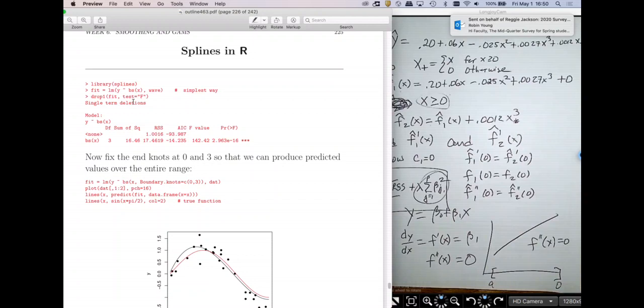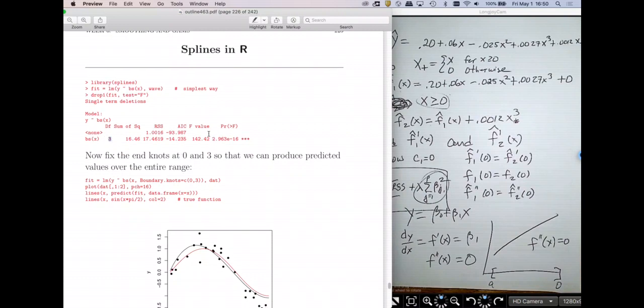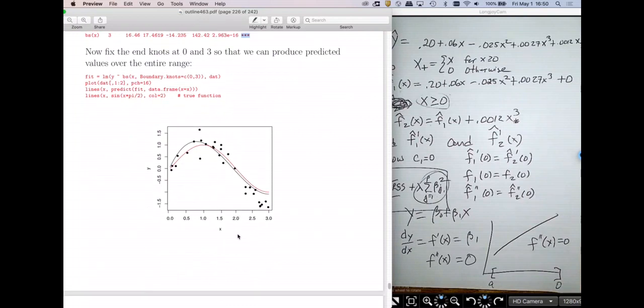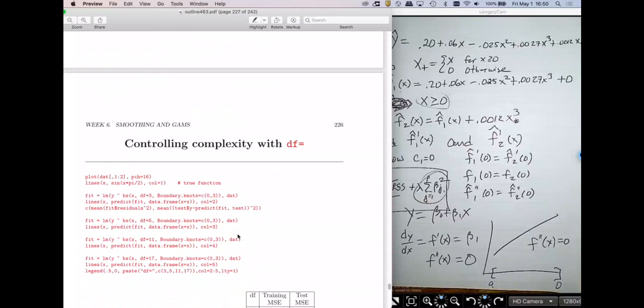So when you do a drop one, what you end up with is something that has three degrees of freedom. So that's why I mentioned those degrees of freedom to you. And this is going to give us an actual F-test. It also gives us AIC statistics that test whether or not I need the nonlinear spline.